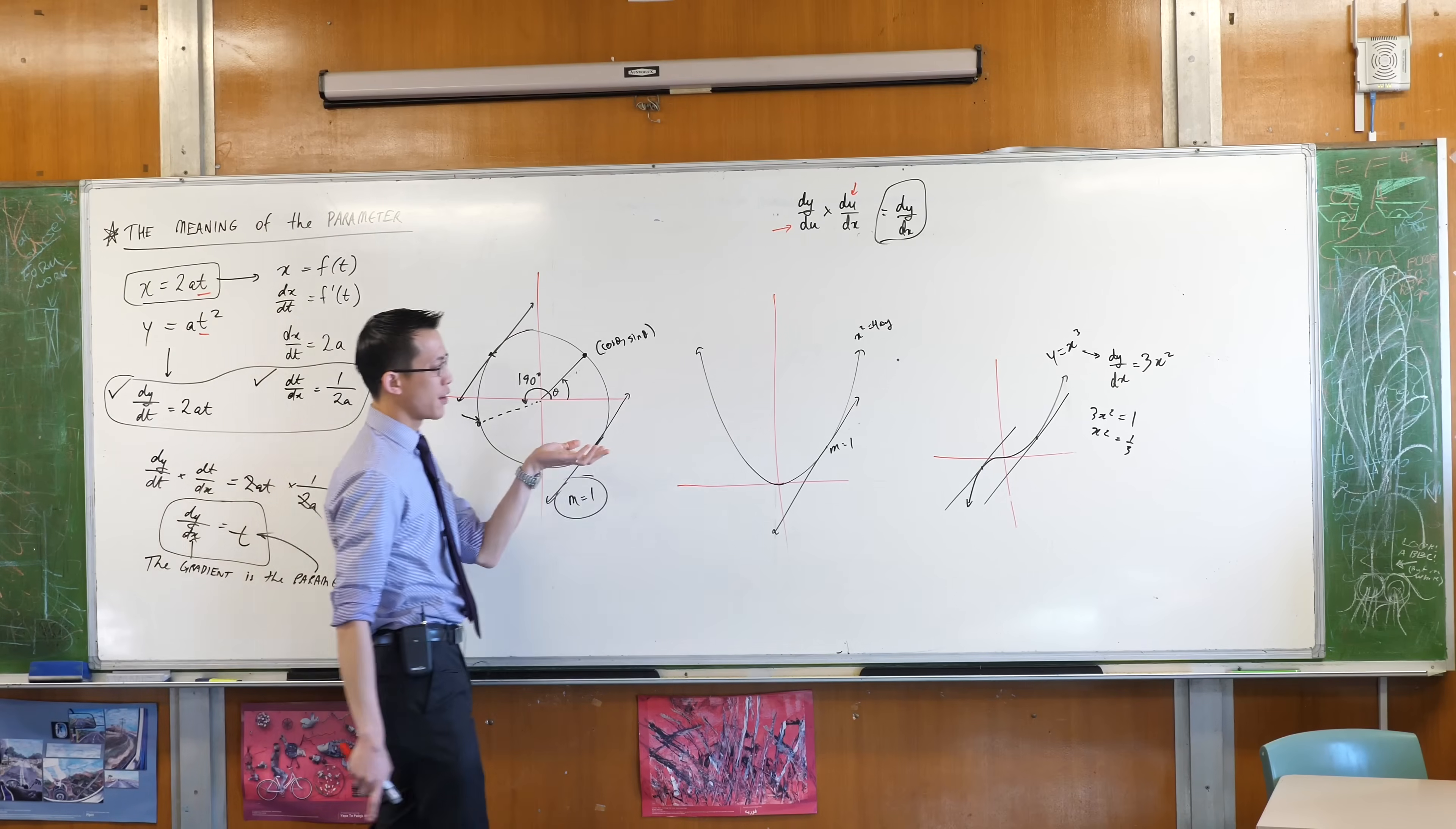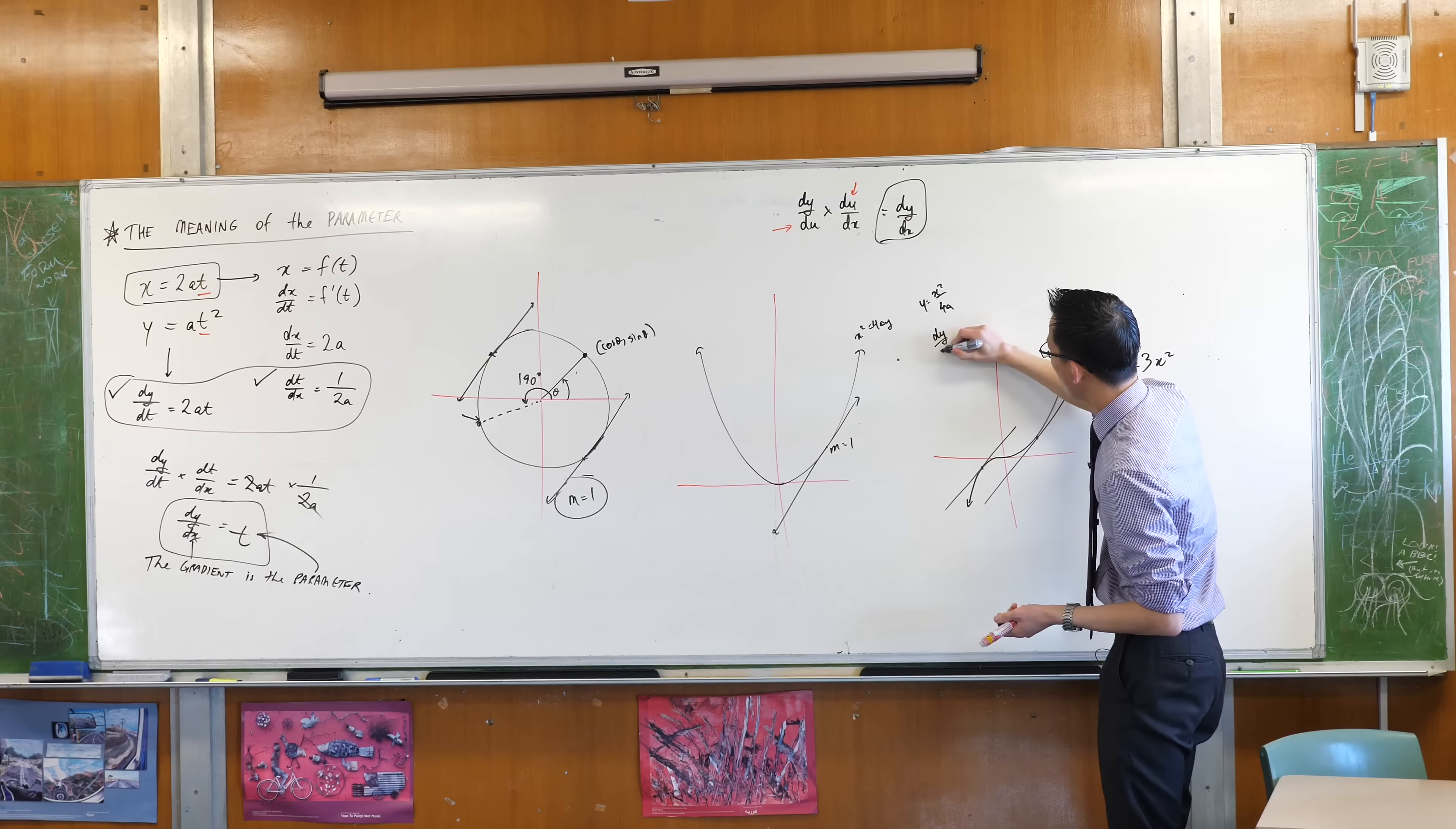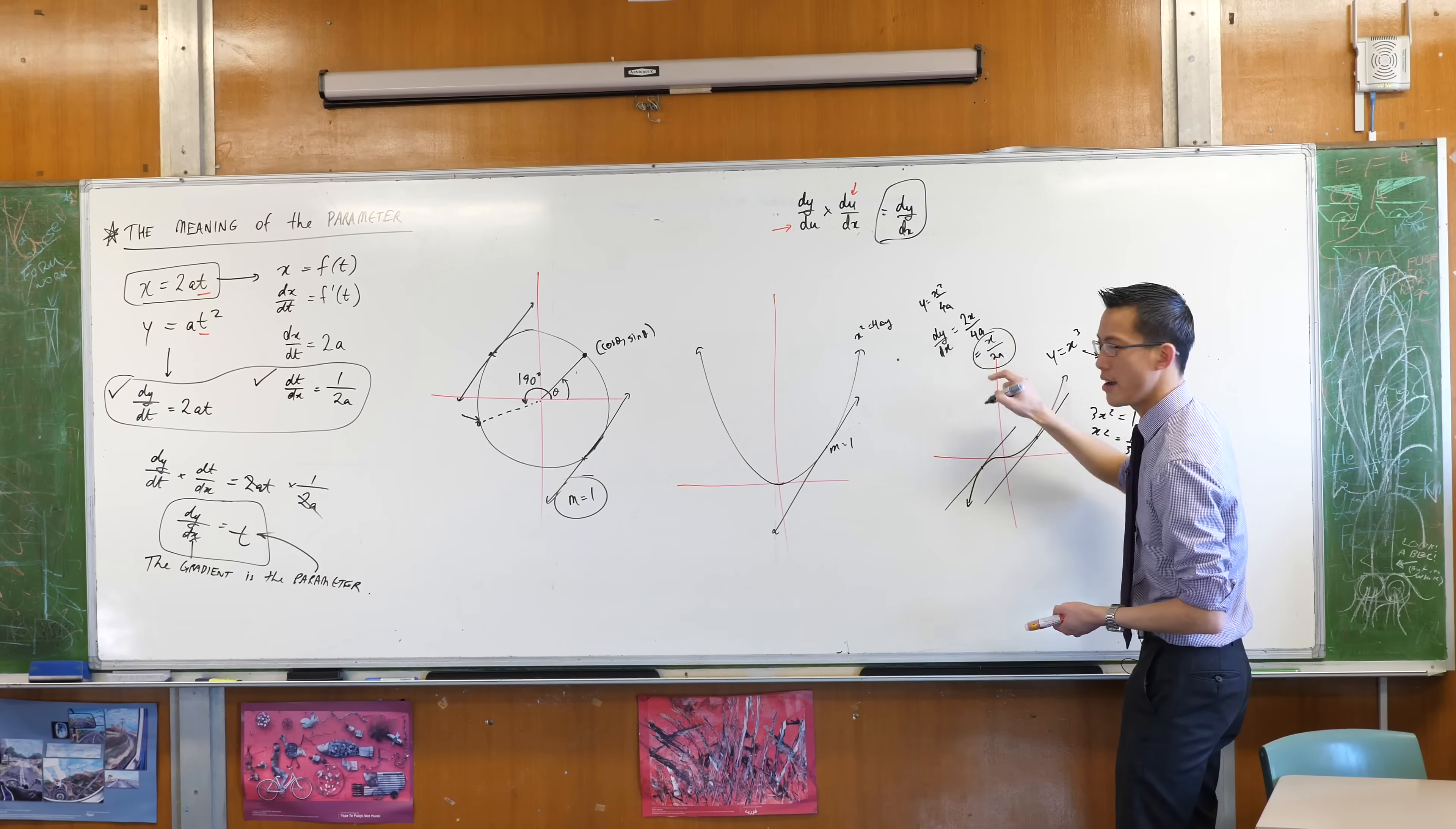Whereas the derivative of a parabola is a linear function. The derivative here, if y equals x squared on 4a, and this is another way we can see it, if you go dy/dx, you can see that you're going to get 2x on 4a, which is x on 2a.